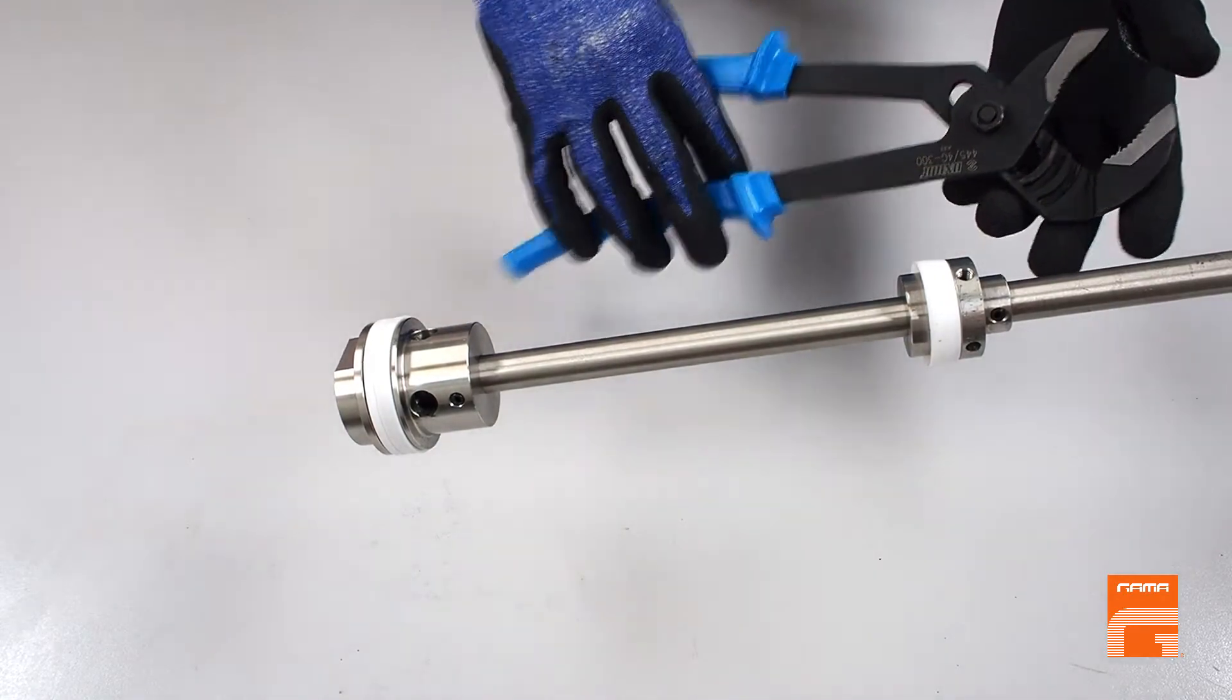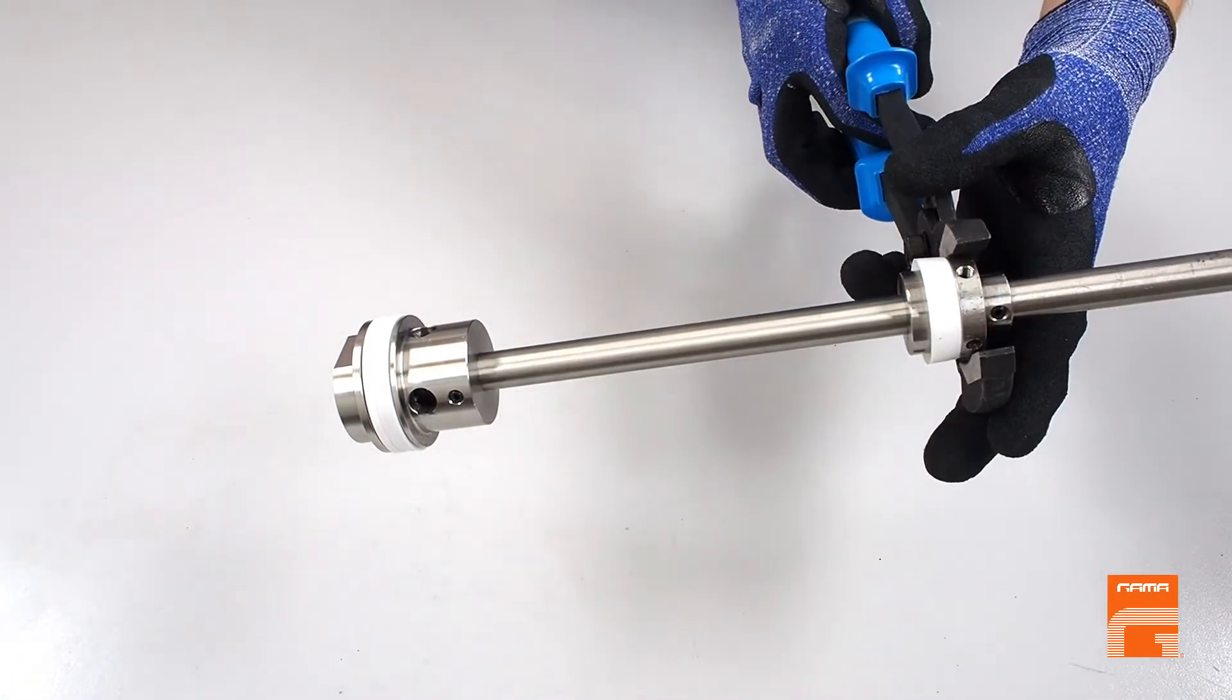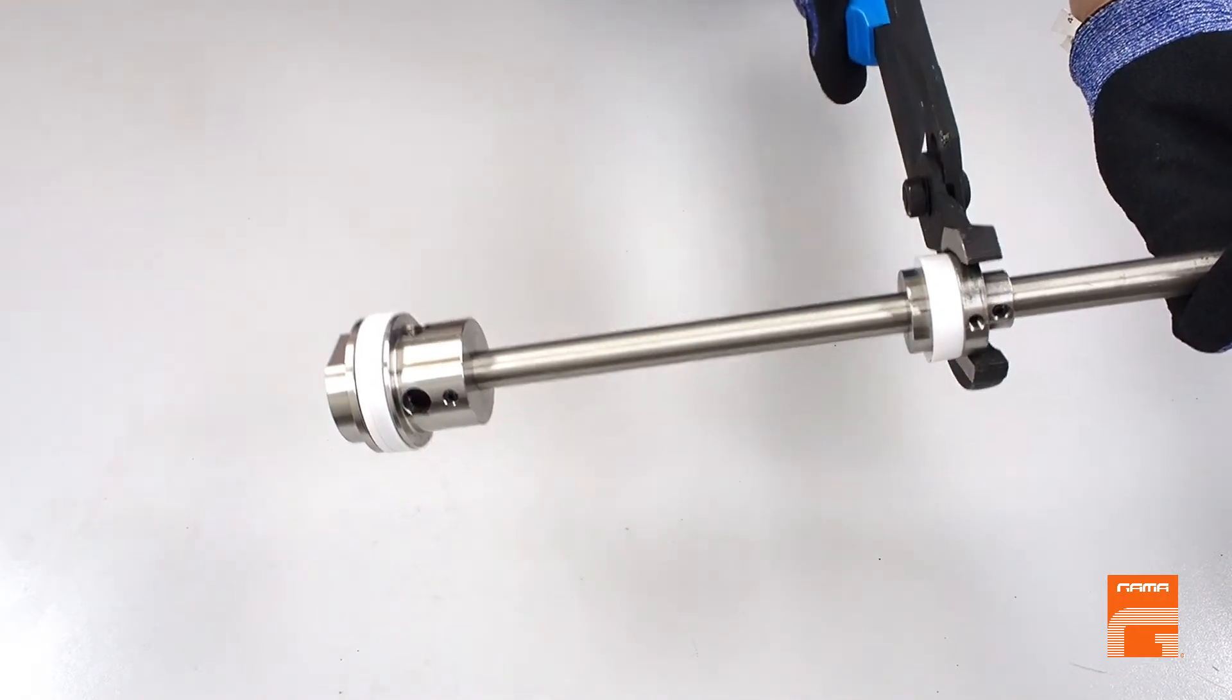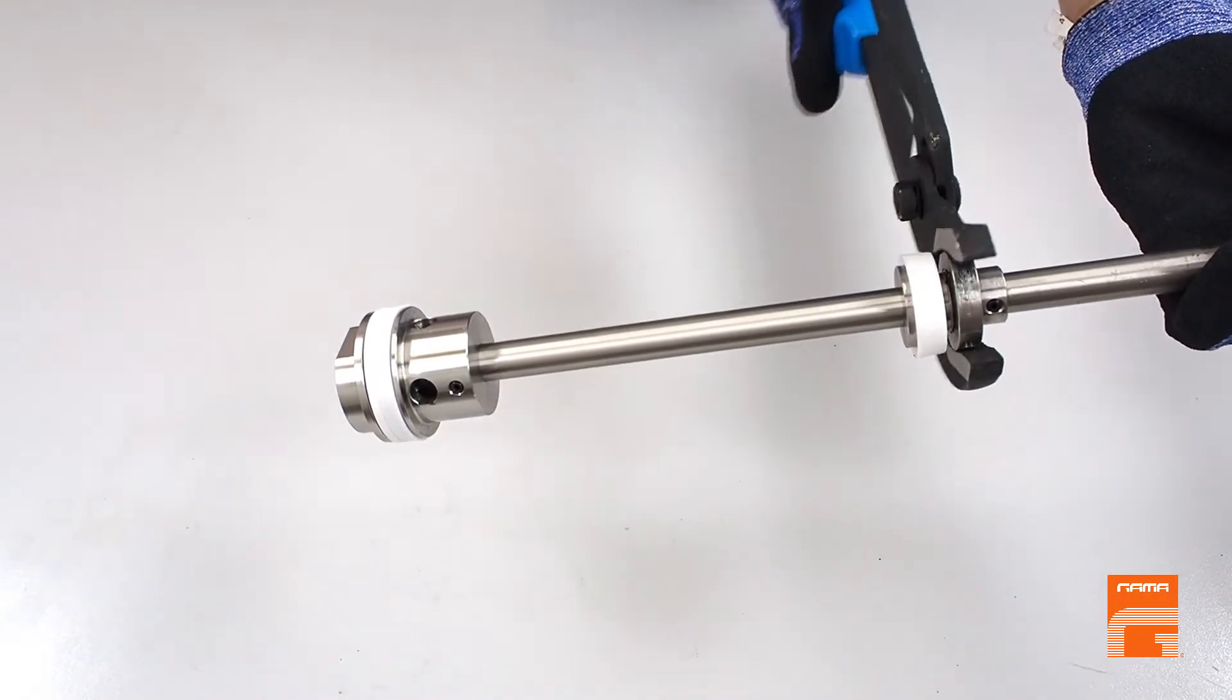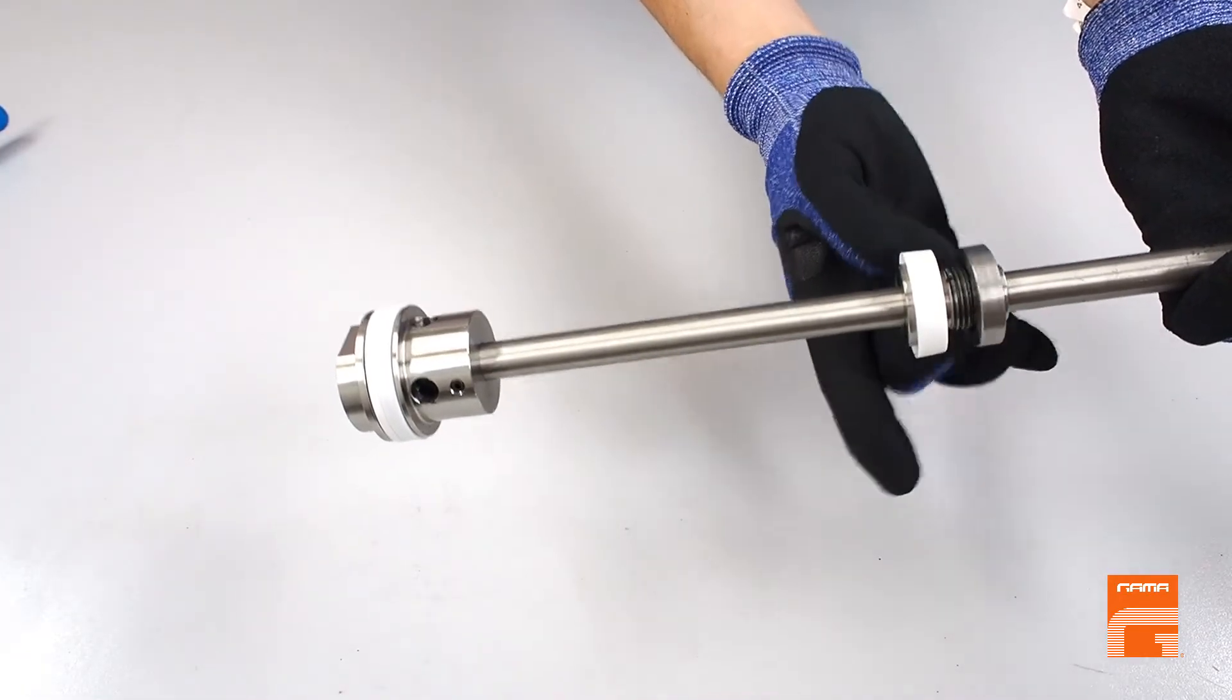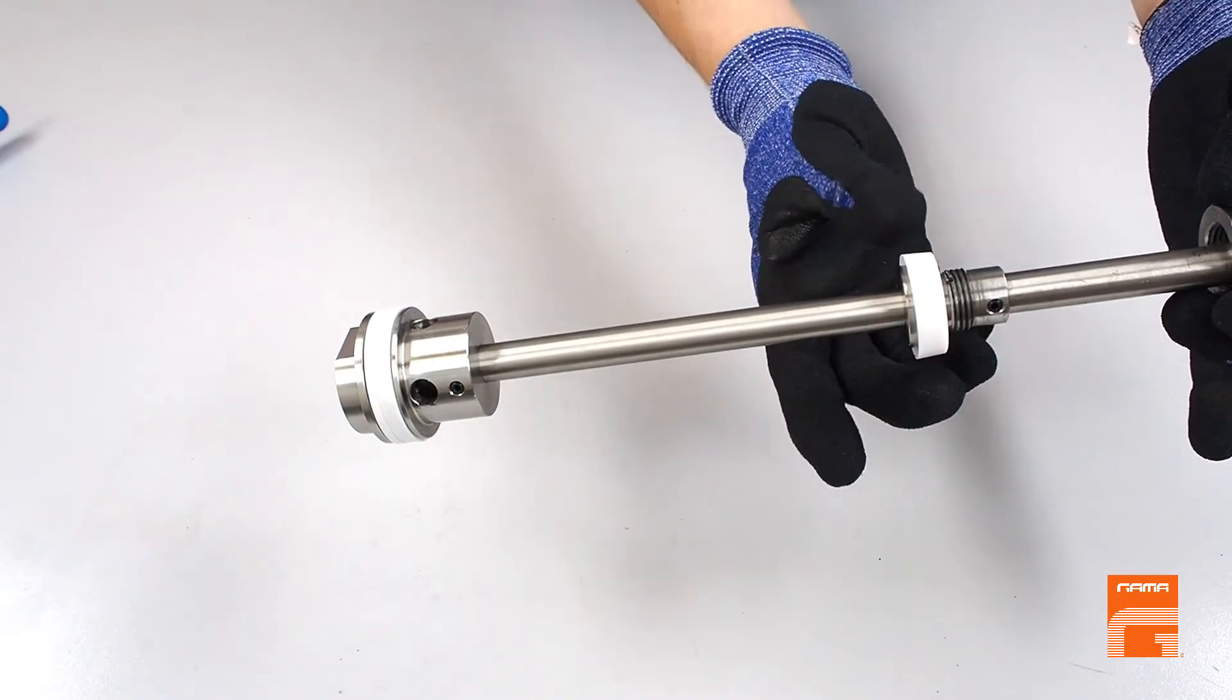After that, using the pliers, untwist the fixing nut and take off the seal.